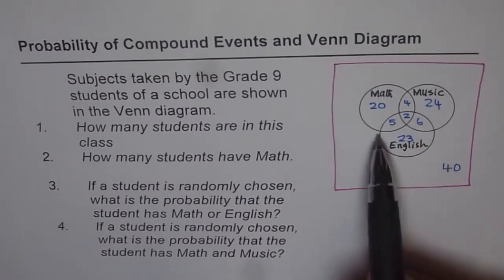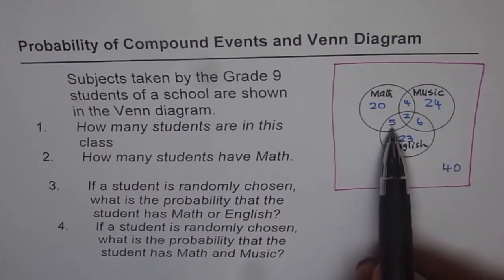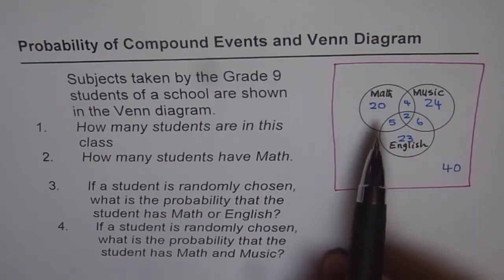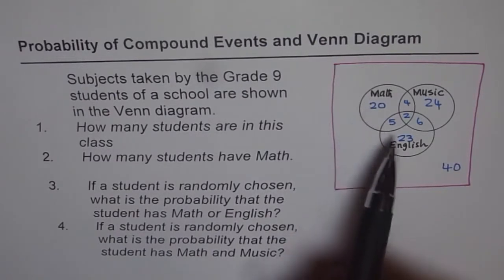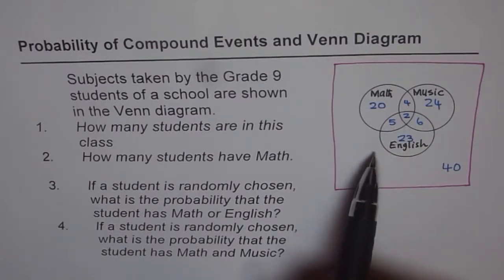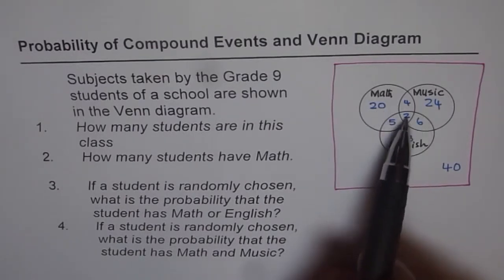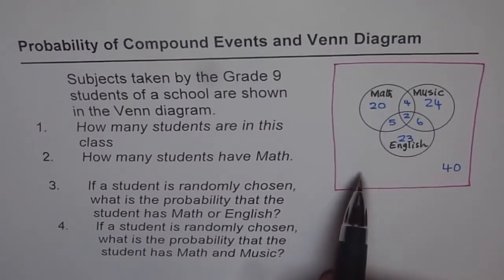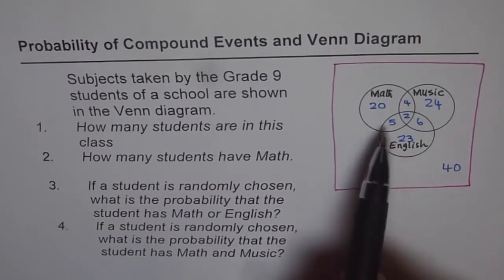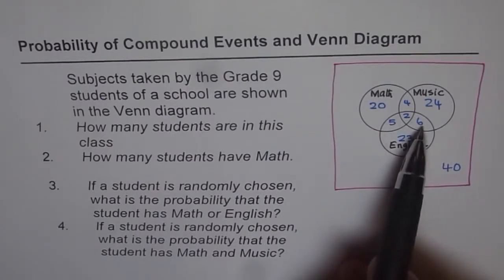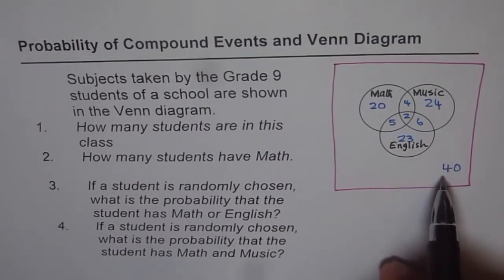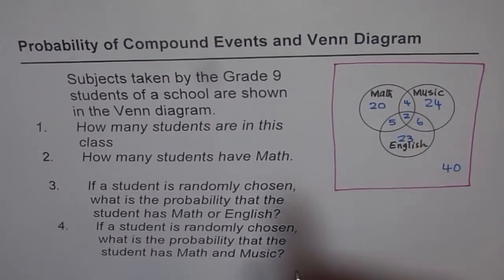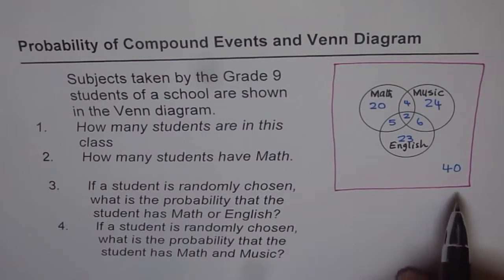These students have taken only maths, English, or music. Numbers written in between the circles are common to those subjects. For example, 5 is the number of students common to maths and English, and 2 is common to maths, music, and English — all three. Six is the number of students who have taken music and English. Outside the circles, there are 40 students who haven't taken any of these three subjects.